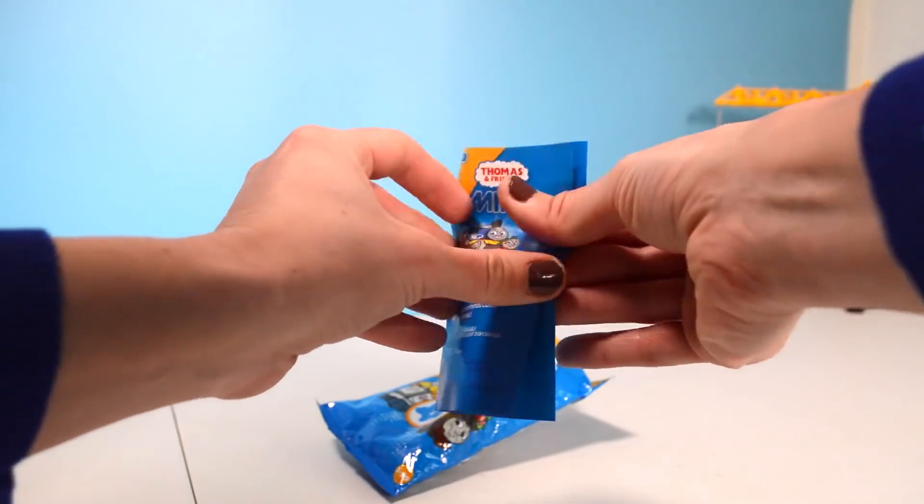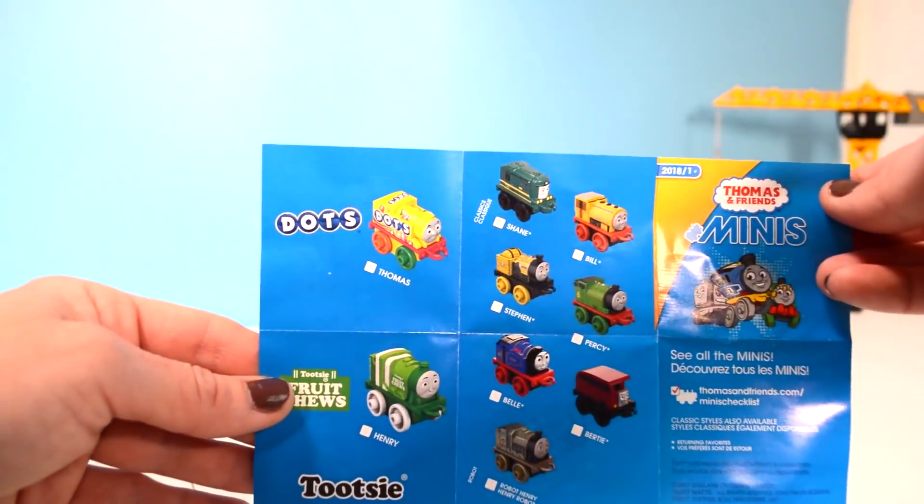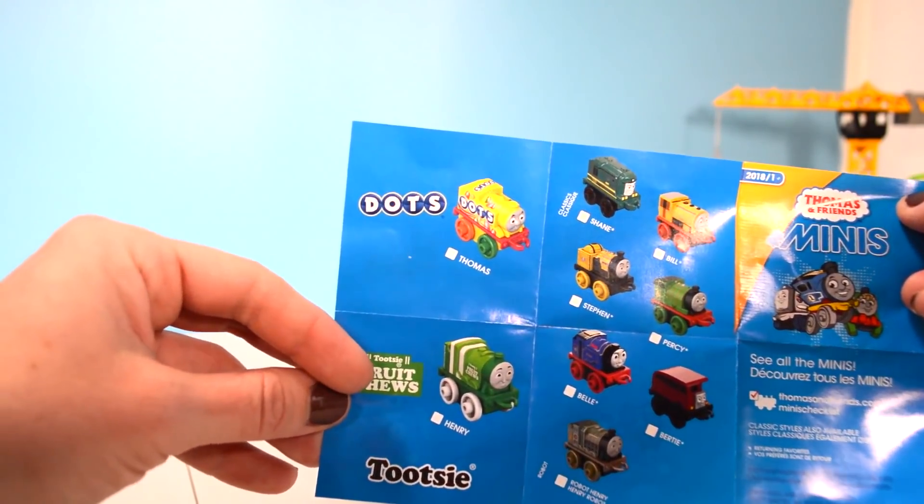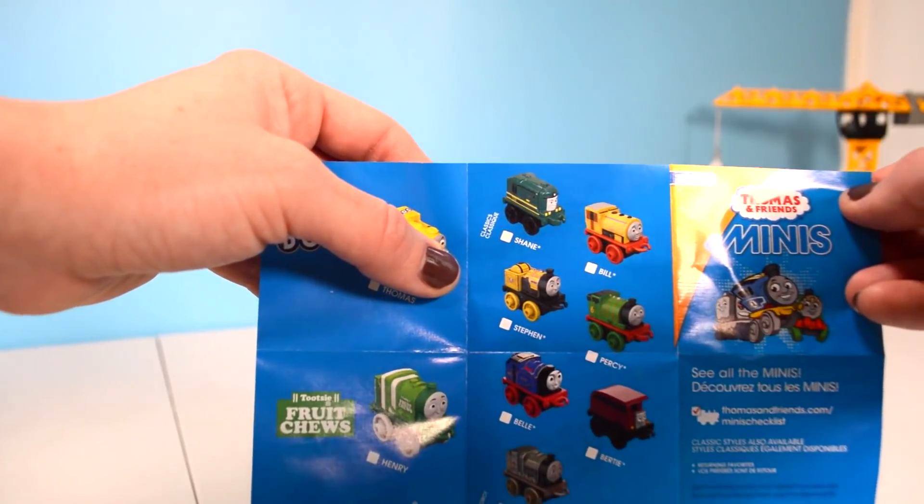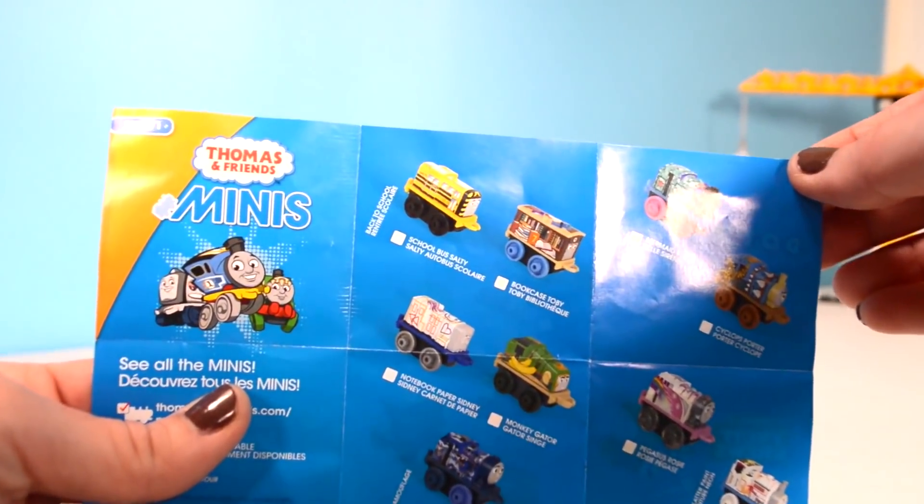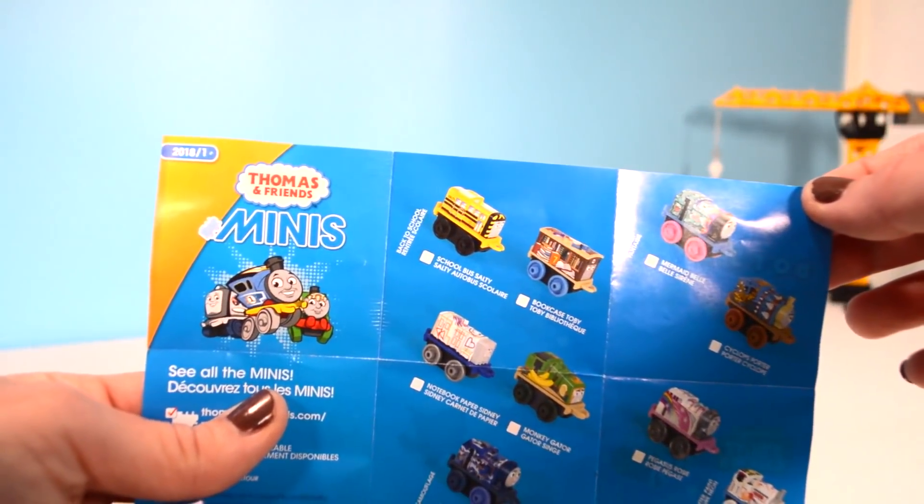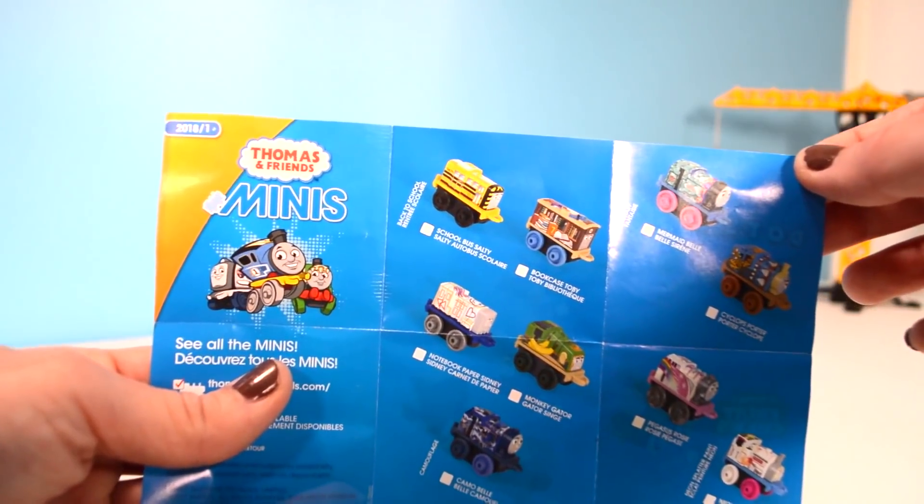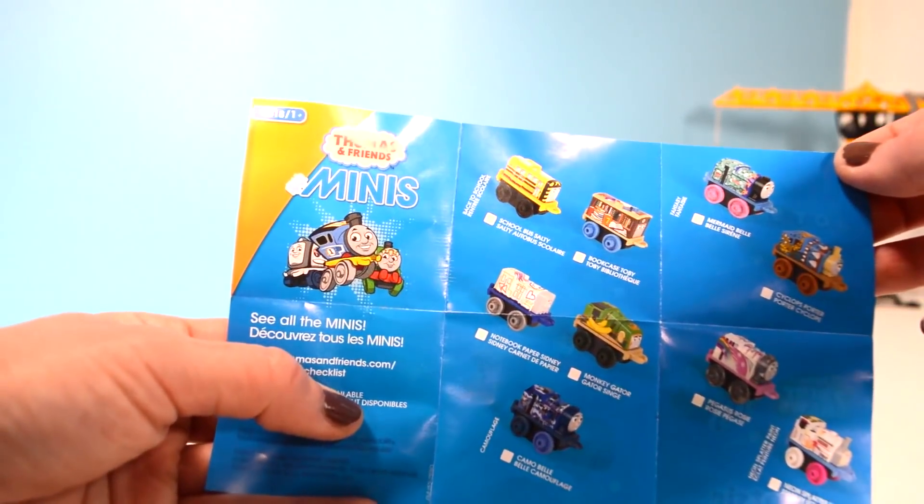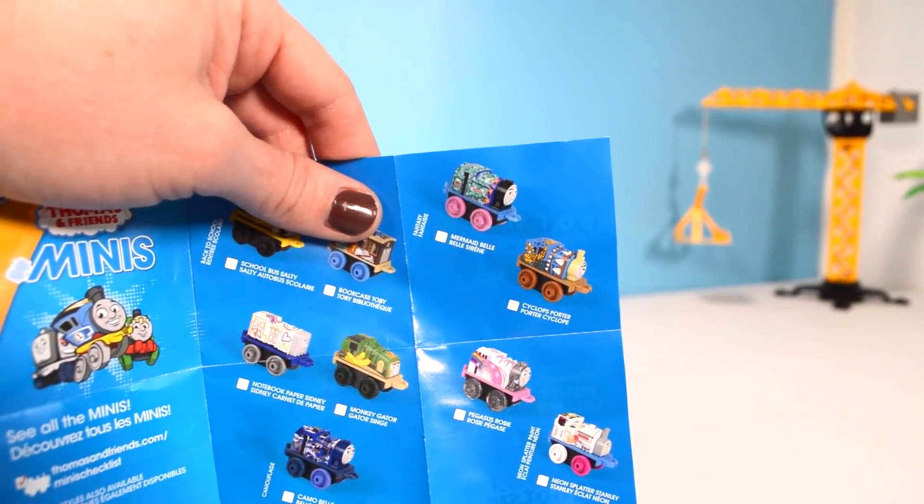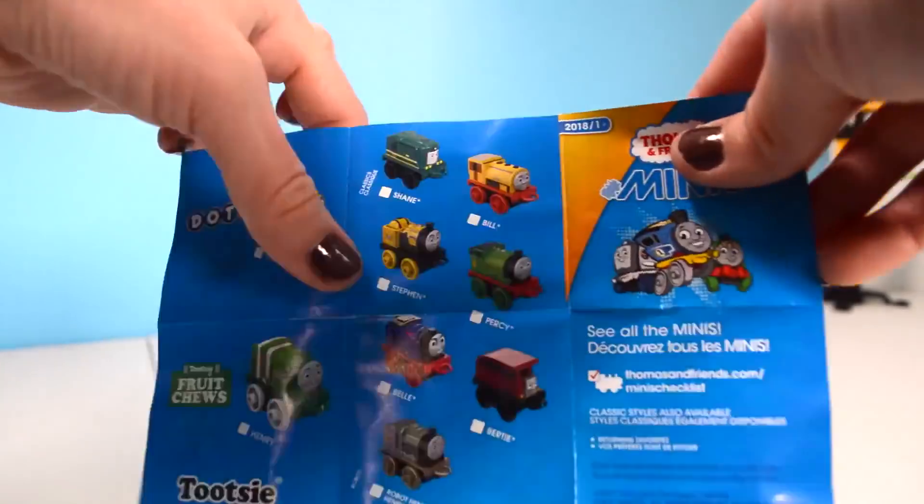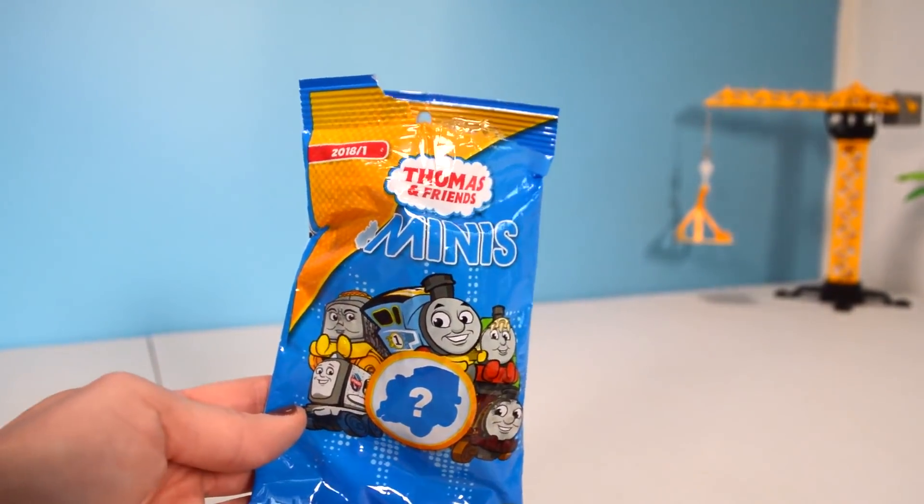Look at this. Let's see which ones could we be getting in here. There's a whole lot you can collect including Thomas with dots on it. Then a Tootsie Roll Fruit Chew one, Henry, Shane, the classical ones, Bill, Steven, Percy, Belle, Robot Henry, and Birdie. There's additional ones here. You have the Back to School school bus salty, Bookcase Toby, Notebook Paper Sidney, Monkey Gator with bananas, Camo Bell, Mermaid Bell, Cyclops Porter, Pegasus Rosie, and Neon Splatter Stanley. Awesome new minis. Let's see which ones are we going to get.